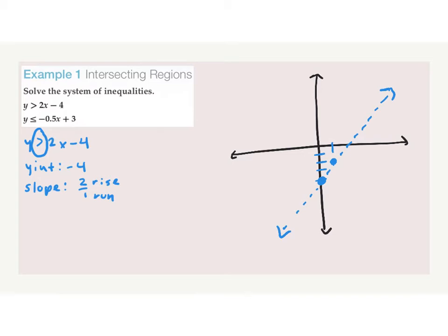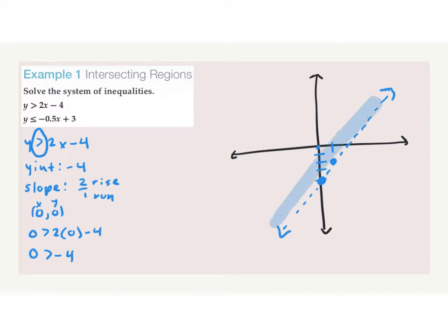Next we need to shade. How do we find out where to shade? Plug in (0, 0). So 0 is greater than 2 times 0 minus 4, which gives 0 > −4. Is this true? Yes, so we shade where (0, 0) is, which is above the line. That takes care of our first line.